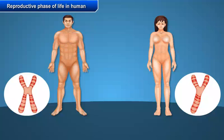The sex of the baby depends on the type of sperm that fertilizes the egg. If the sperm with the X chromosome fertilizes the egg, it results in a zygote with two X chromosomes, which develops into a female child. If a sperm with a Y chromosome fertilizes the egg, it results in a zygote with one X and one Y chromosome, developing into a male child. Therefore, the sex chromosomes of the father determine the sex of an unborn baby.